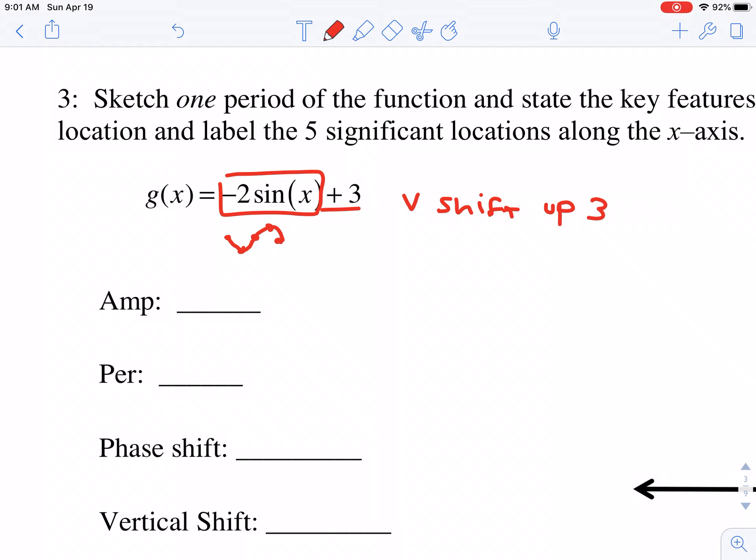My amplitude is still going to be two because that a value is negative two, telling me that we have both a vertical stretch of two and we have a vertical reflection. My B value is still one. It still hasn't changed, so my period is still going to be two pi.